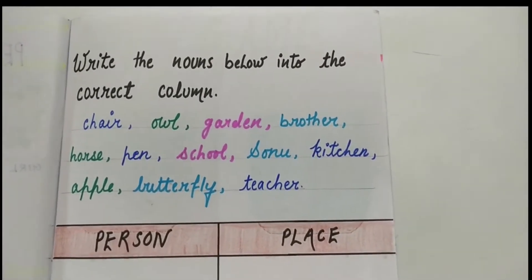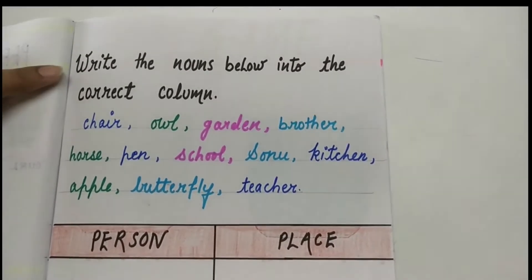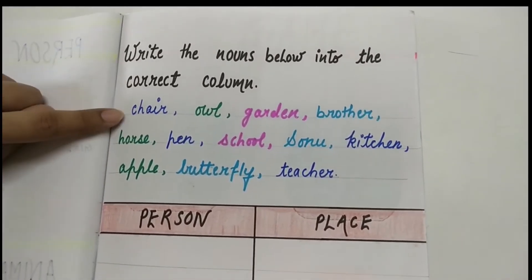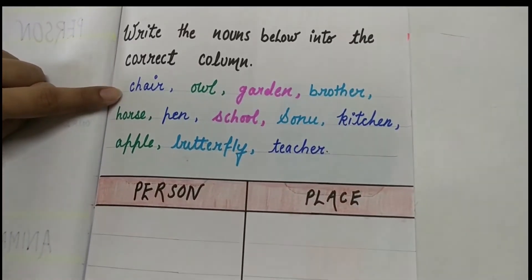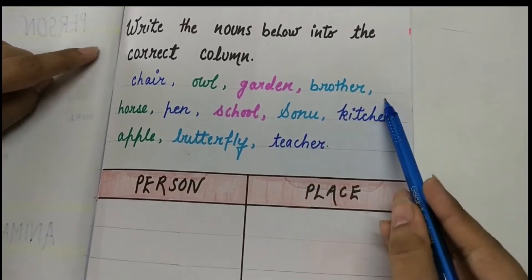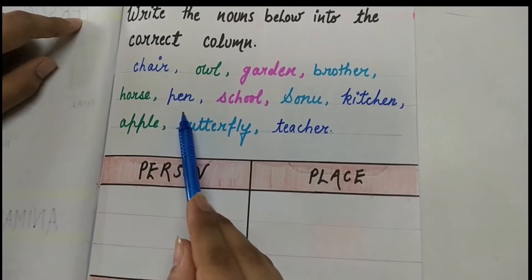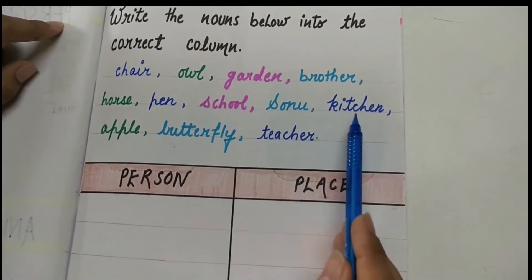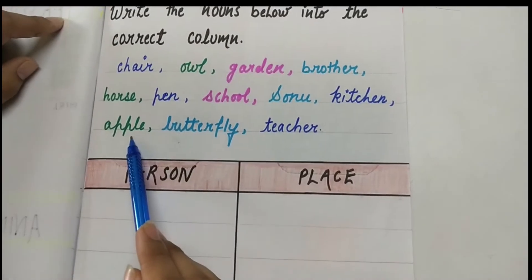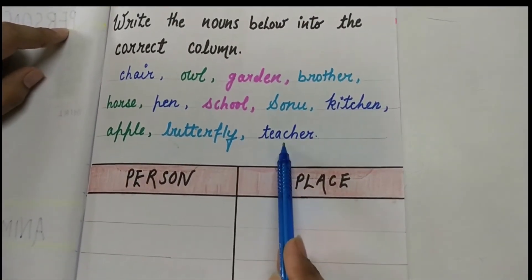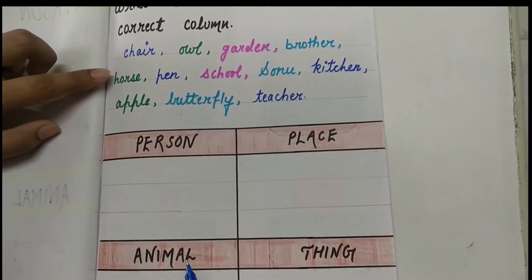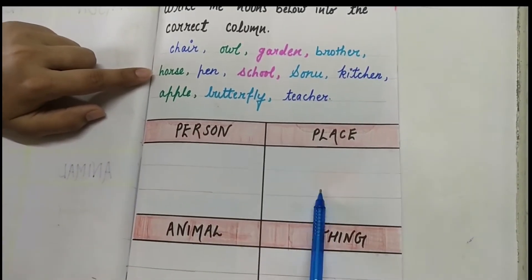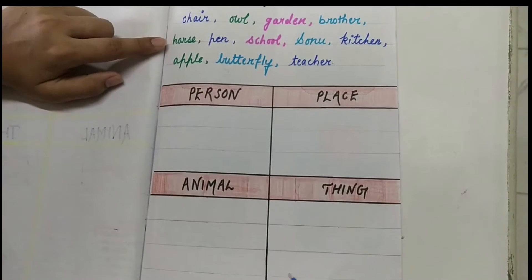Now students, we will do one exercise. Write the nouns below into the correct column. The words are: chair, owl, garden, brother, horse, pen, school, Sonu, kitchen, apple, butterfly, teacher. From all these words we have to find out which word is a person, place, animal, or thing.